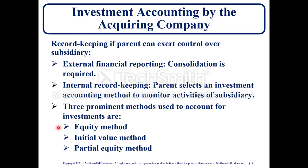For external financial reporting, if the parent exerts control over a subsidiary — 50% or more — they're going to consolidate the financial statements. But internally, they can choose between different methods for internal record keeping. The three most prominent ones are the equity method, initial value method, and partial equity method.